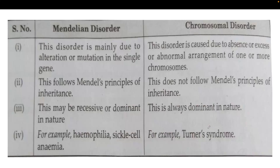What is the difference between Mendelian disorder and chromosomal disorder? In Mendelian disorder, it happens because of changes or mutation in a single gene level. Whereas when changes or abnormal arrangement occur in one or more chromosomes, then it is called a chromosomal disorder.